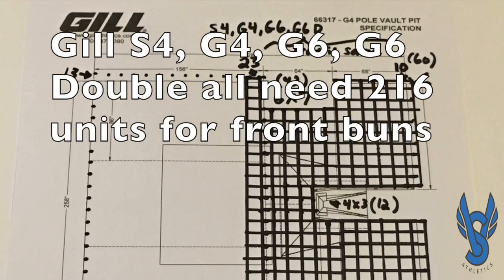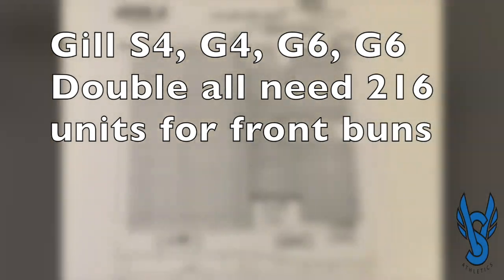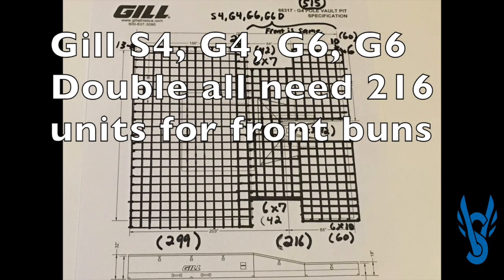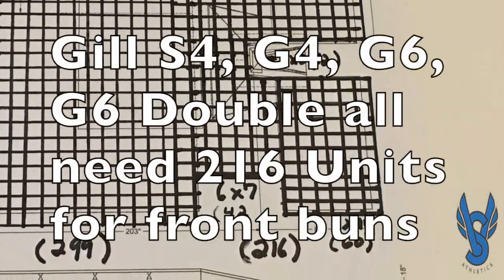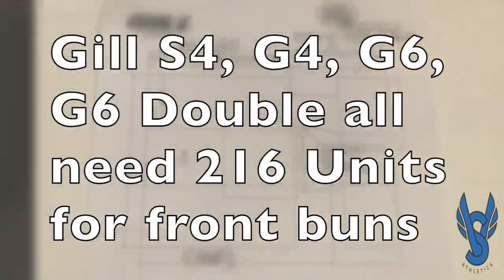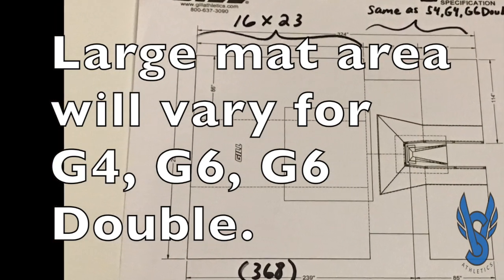Remember, many of the landing systems have identical measurements for the front bun area. For example, the S4, G4, G6, and G6 double will all use the same 216 units for the front bun area but will have different number counts for the large landing areas.